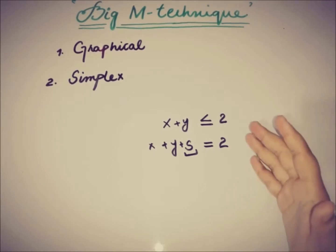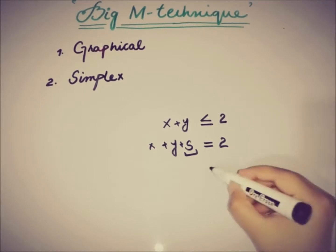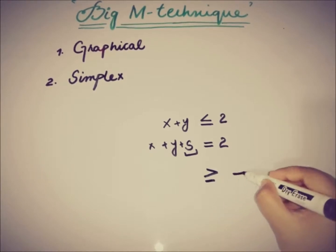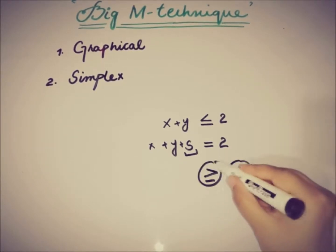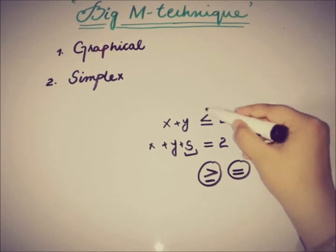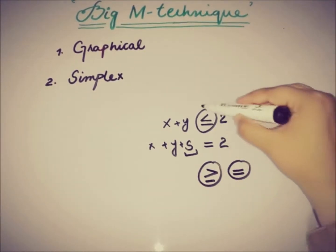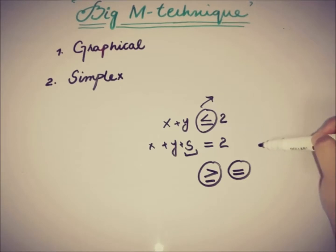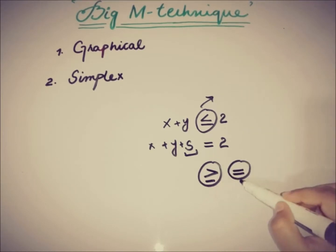But if we have constraints of the type greater than or equal to, or equality, there are three possibilities for the sign of a constraint: less than or equal to, which we handled in the simplex method; greater than or equal to; and equality.